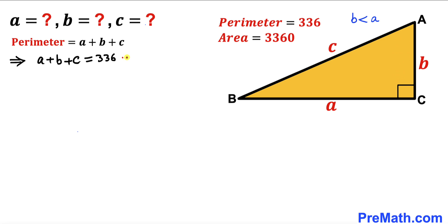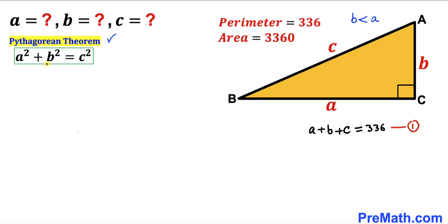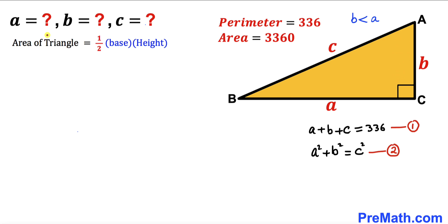Let me call this equation number one. Since we are dealing with a right triangle, let's recall the Pythagorean theorem: a squared plus b squared equals c squared. Let me call this equation number two. Now let's recall the area of a triangle formula: area equals one half times base times height. In our case, the base is a, the height is b, and the area is 3360.